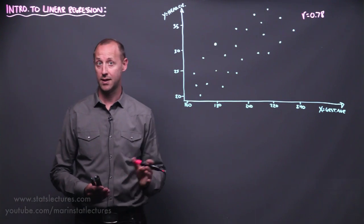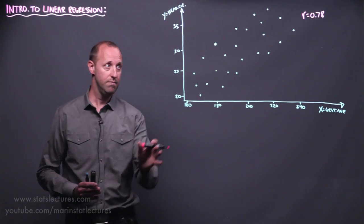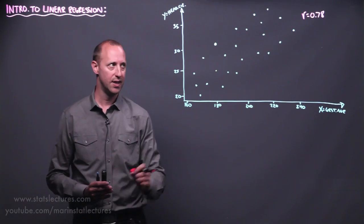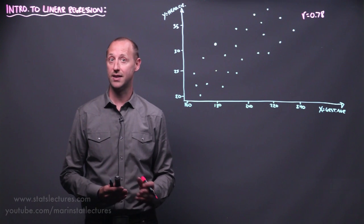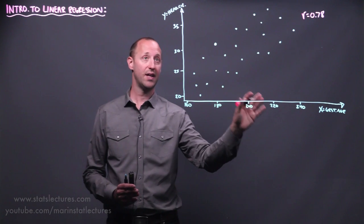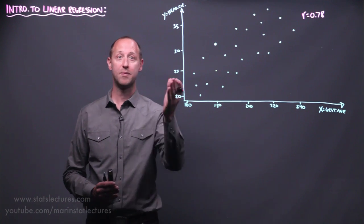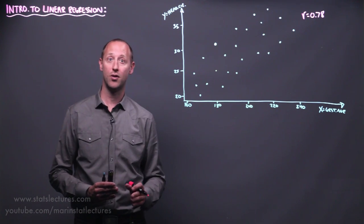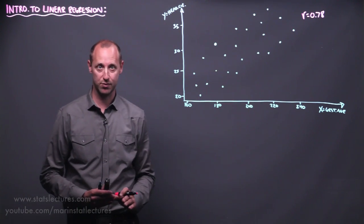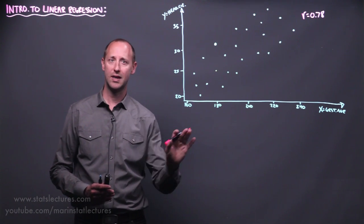One thing about the correlation coefficient is that it only helps describe the direction and strength of association. We can see there's a positive association — as x increases y increases — and this tells us something about the strength of the linear association. But it doesn't allow us to say anything about the effect of x on y. For example, every time gestational age increases by one day, what do we expect to happen to head circumference? Or if we want to build a predictive model, use gestational age to try and estimate what the head circumference will be. Pearson's correlation is a useful measure for summarizing an association but it's quite limited.